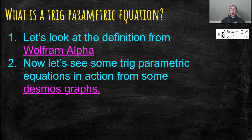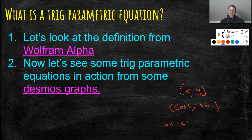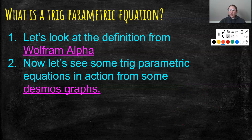Those are what parametric equations are — there's an equation in terms of t for x, and an equation in terms of t for y. When we graph, we graph (x, y). So instead of one fixed point, I'm telling you x = cos(t) and y = sin(t), where t goes from 0 to 2π. When t = 0, cos(0) = 1 and sin(0) = 0, giving the point (1, 0). As t goes all the way to 2π, these points populate as a circle.